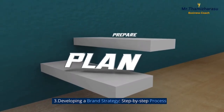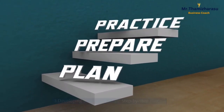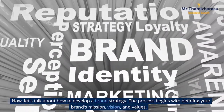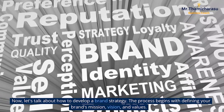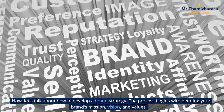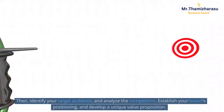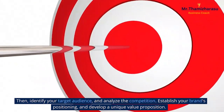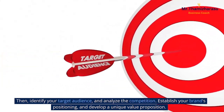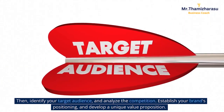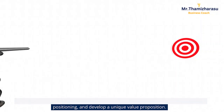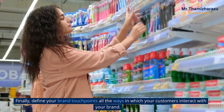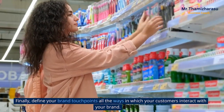Developing a Brand Strategy: Step-by-Step Process. Let's talk about how to develop a brand strategy. The process begins with defining your brand's mission, vision, and values. Then, identify your target audience and analyze the competition. Establish your brand's positioning and develop a unique value proposition. Finally, define your brand touchpoints — all the ways in which your customers interact with your brand.